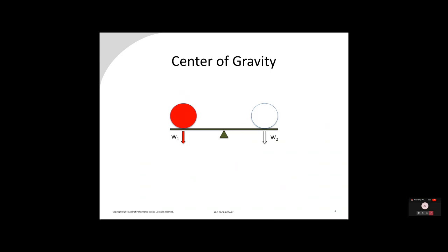Center of gravity is the point where, if you could balance any object — including an airplane — on the tip of your finger, your finger would be at the CG. It is where the moments sum to zero. To calculate CG, sum the weights of everything involved, then sum the moments about any reference point called the datum. The datum is typically a point near the nose of the aircraft — though some aircraft like the DeHavilland Dash 8 have the datum on the wing.